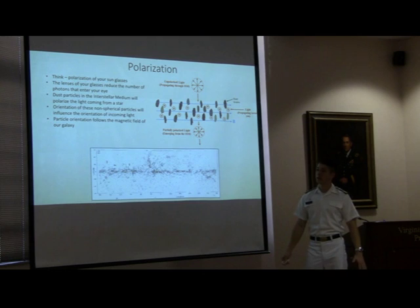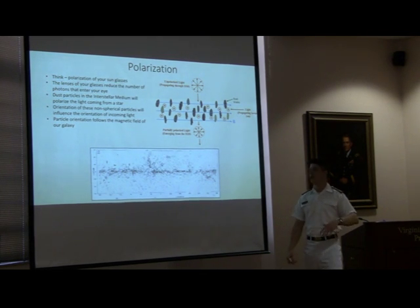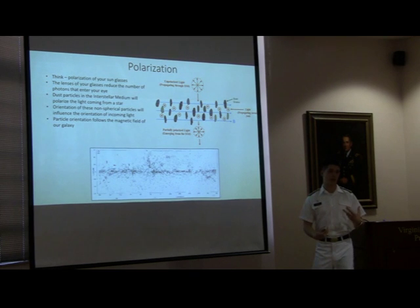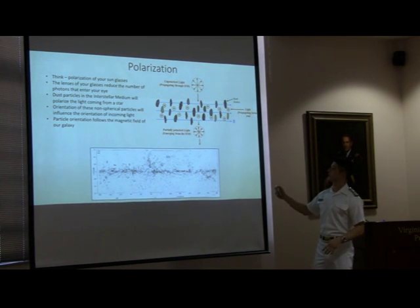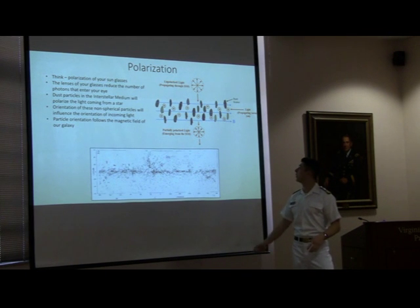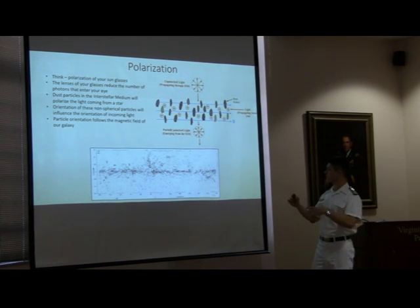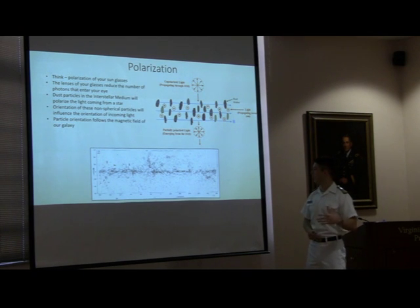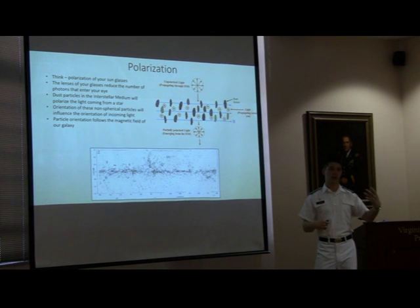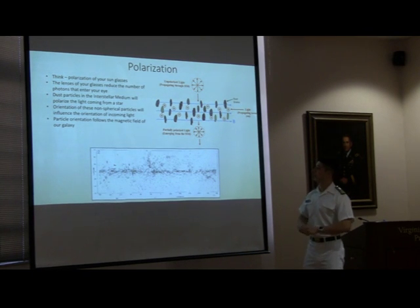So, polarization — the first thing you've got to think of is your sunglasses. You're driving down the street and you put them on to extinguish the light coming into your eyes. You're reducing the amount of photons by the polarization in the lenses. Similarly, dust particles will actually do that in an interstellar medium. We have dust particles floating out there, and they're spinning on an axis that follows the magnetic field of our galaxies. So a star out there is shining light through these particles and actually getting polarized, like your sunglasses, when it reaches us.